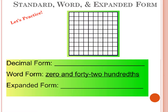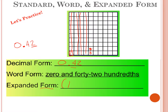What would it be if we had zero and 42 hundredths? Let's write that number in standard form: zero and 42 hundredths. I need to shade 42 of these hundredths — each box is a hundredth. So 10, 20, 30, 40, 41, 42 hundredths. In expanded notation we have a 4 in the tenths place plus a 2 in the hundredths place. In fraction form, the only thing that changes is the decimal becomes a fraction.